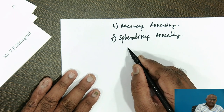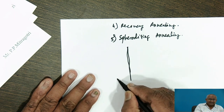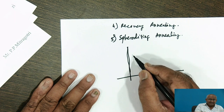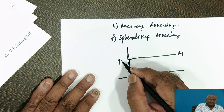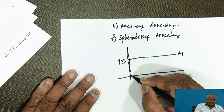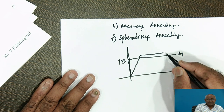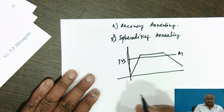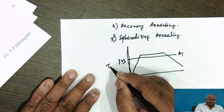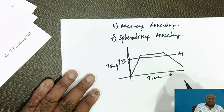Spheroidizing annealing is carried out by heating the steel 30 degrees above the A1 temperature, holding it there for sufficient length of time, and cooling slowly to room temperature. This treatment can be shown on a temperature versus time graph.